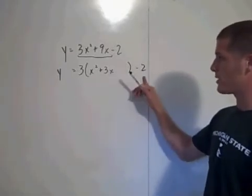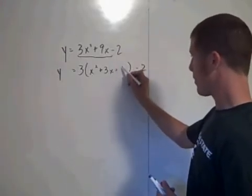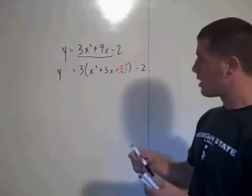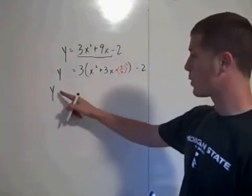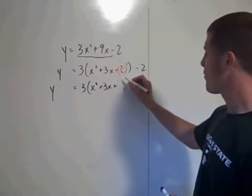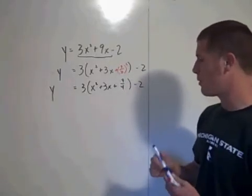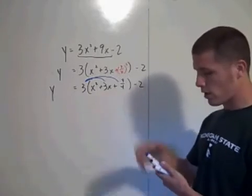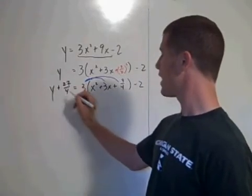Complete the square by adding (b/2) squared — that's 9 fourths — inside the parentheses. But because of the distributive property, that 3 gets distributed to each term inside, so you actually added 27 fourths to the right side, not just 9 fourths. Therefore you must add 27 fourths to the left side too. Now the right side has x squared plus 3x plus 9 fourths, so y plus 27 fourths equals 3 times x plus 3 halves squared minus 2.